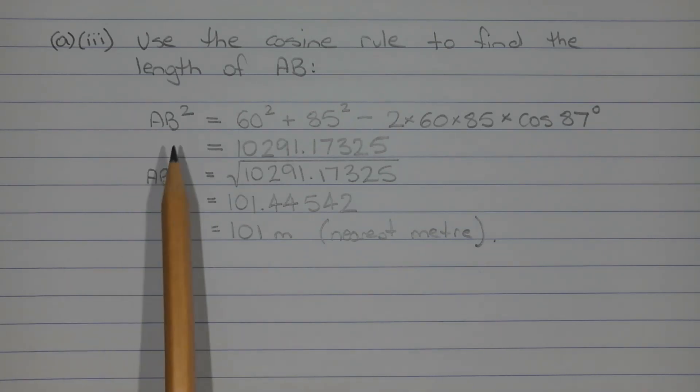So applying the cosine rule, we get AB squared is equal to 60 squared plus 85 squared minus 2 times 60 times 85 times cos of 87 degrees, which equals 10291.17325.